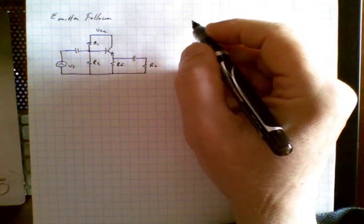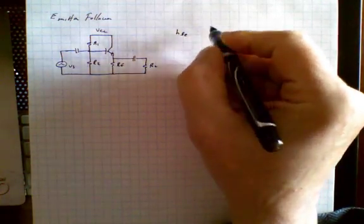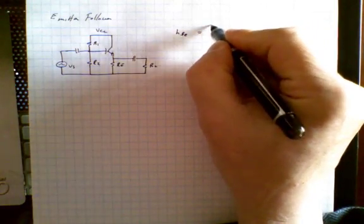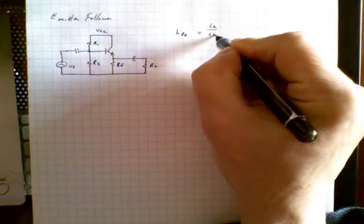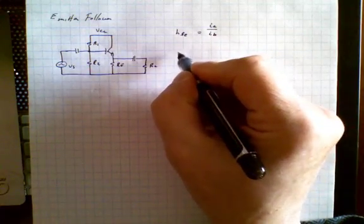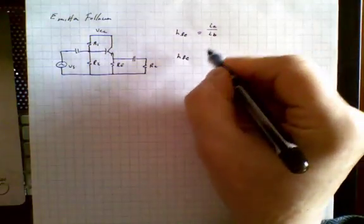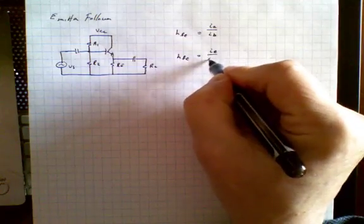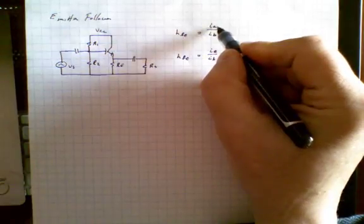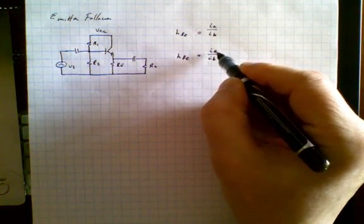You'll remember that we've already identified a parameter called hfe — h small fe — and this is the same as the AC beta. It is simply defined as the AC collector current divided by the AC base current. Another parameter which often appears on data sheets is hfc, and this is the emitter current divided by the base current. So hfe is the collector current divided by the base current, whereas hfc is the emitter current divided by the base current.